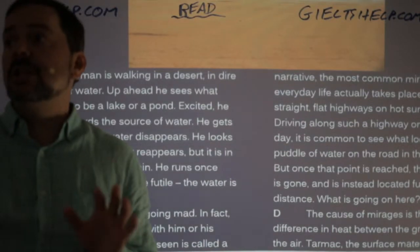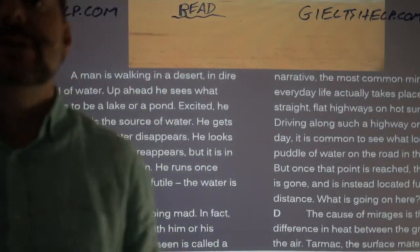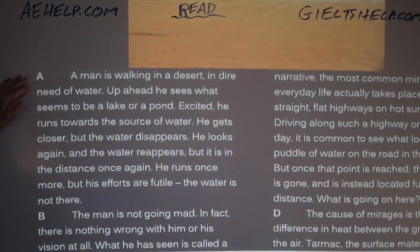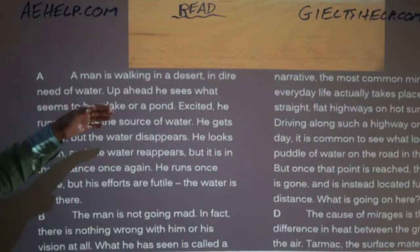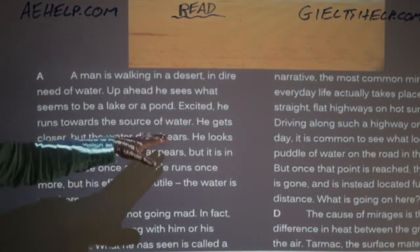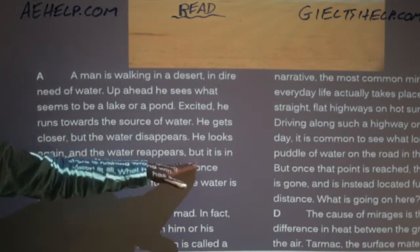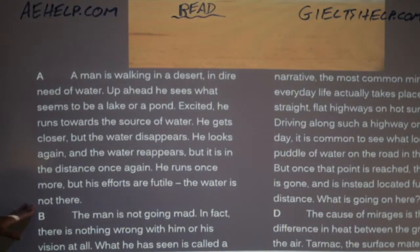Paragraph A: 'A man is walking in a desert in dire need of water. Up ahead he sees what seems to be a lake or a pond. Excited, he runs towards the source of water. He gets closer, but the water disappears. He looks again and the water reappears, but it is in the distance. Once again he runs, but his efforts are futile. The water is not there.'